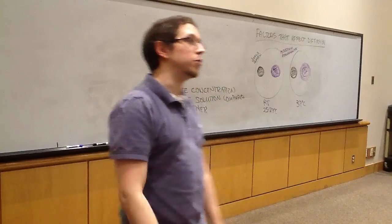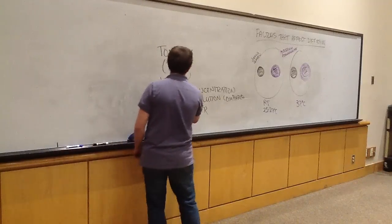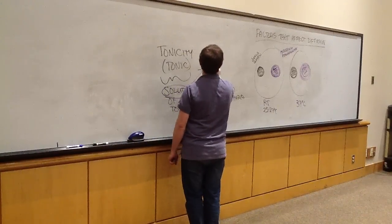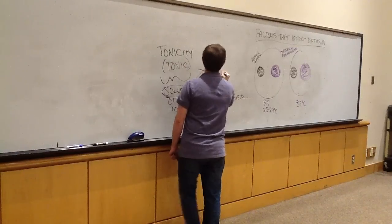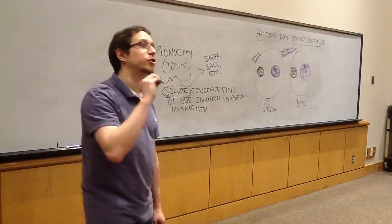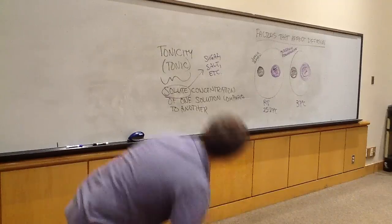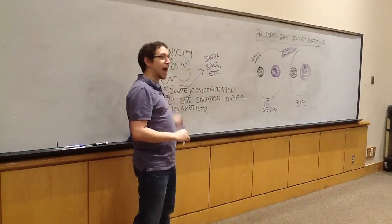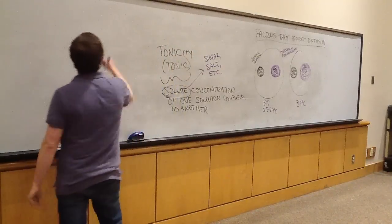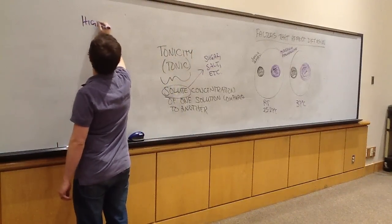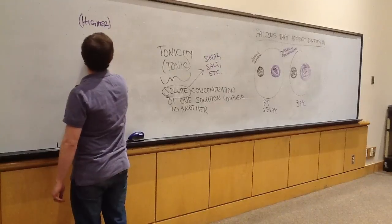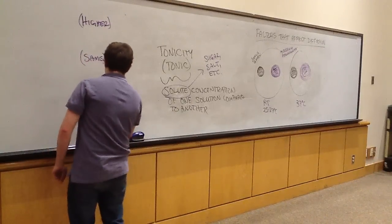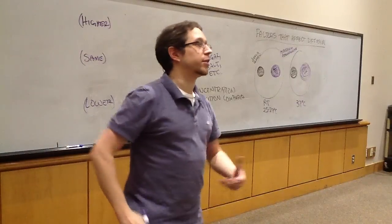Tonicity, or as you'll sometimes see it, tonic, refers to the solute concentration of one solution compared to another. So again, we have another comparative term. There are three prefixes we can place in front of this that will tell us the various levels of how this solute concentration compares.